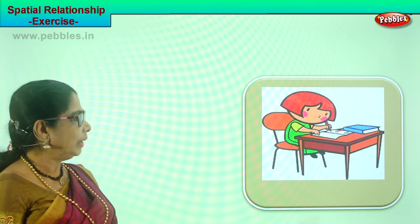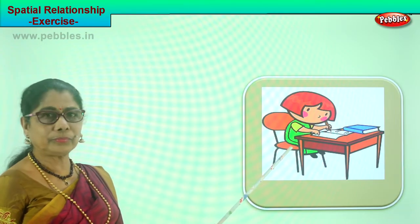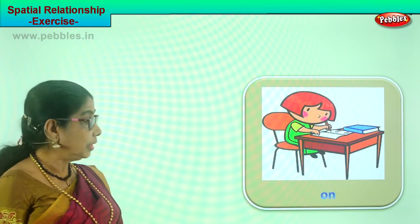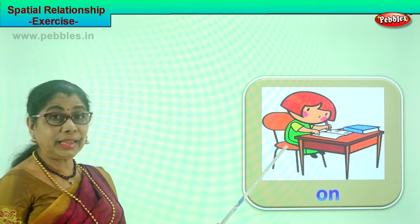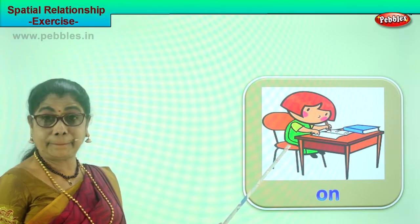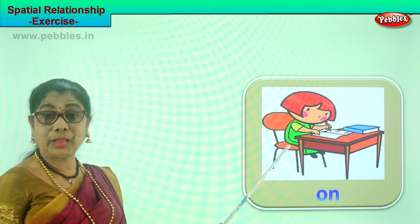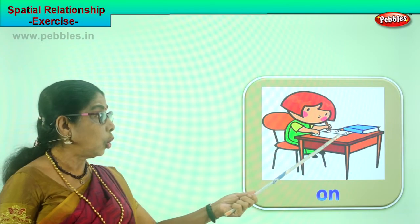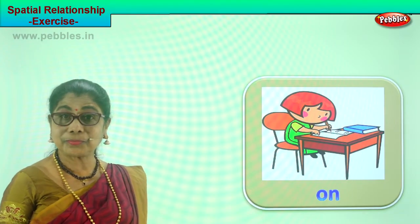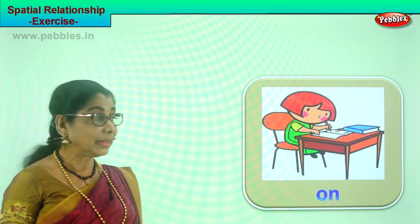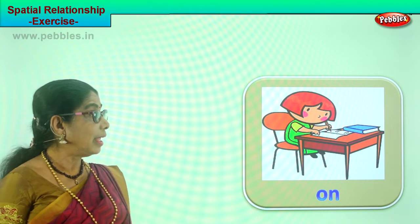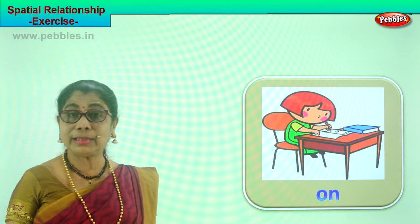Where is she sitting? She is sitting on a chair. Where are the books? They are on the table. She is sitting on a chair and she is busy doing her work.